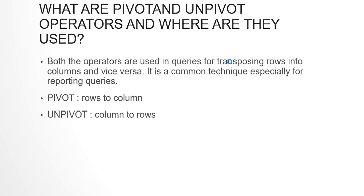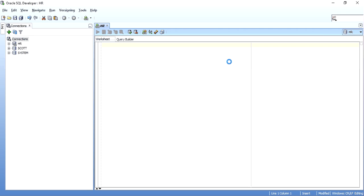PIVOT is used when you want to change your rows to columns, and you will use UNPIVOT when you want to change your columns to rows. I will just show you this with a simple example. Say suppose I want the count of all the employees in all the departments — so I want the department ID and the count of employees in it. This is all from the employees table.